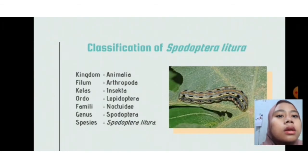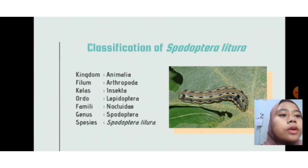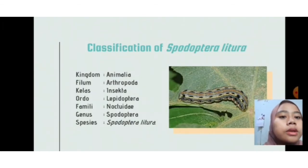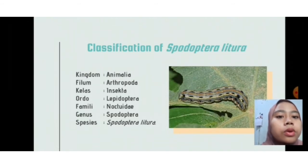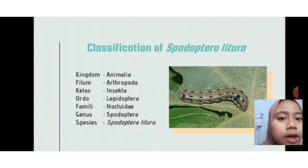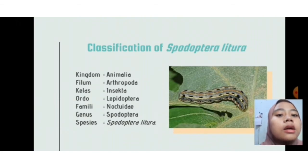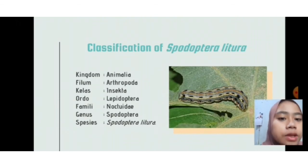Classification of Spodoptera littoralis: Kingdom Animalia, Phylum Arthropoda, Class Insecta, Order Lepidoptera, Family Noctuidae, Genus Spodoptera, Species Spodoptera littoralis.